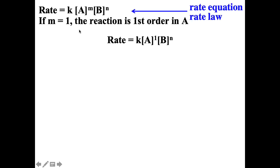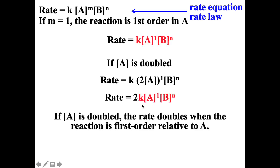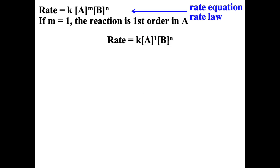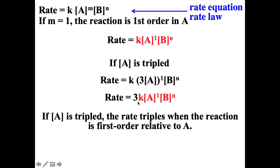Consider rate = K[A]^M[B]^N. If M equals one, the reaction is first order with respect to A. If we double the concentration of A, that's two to the first power, so the rate doubles. If we triple the concentration of A, that's three to the first power, so the rate is three times as fast.